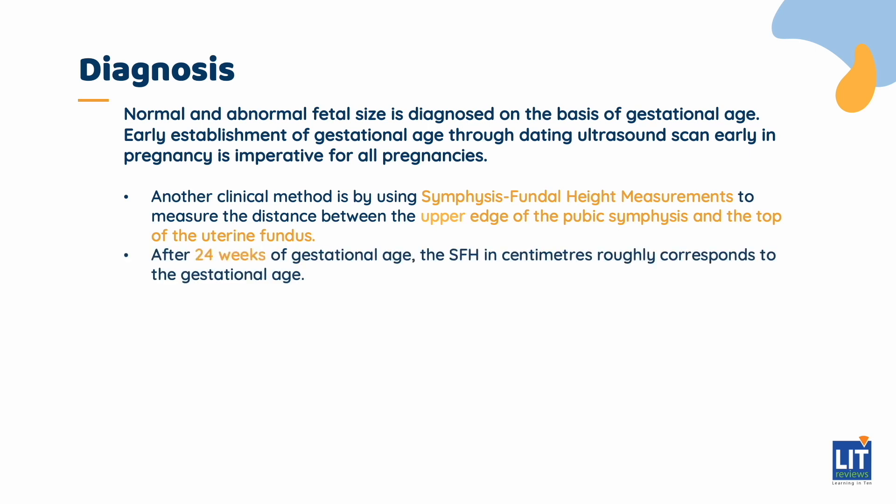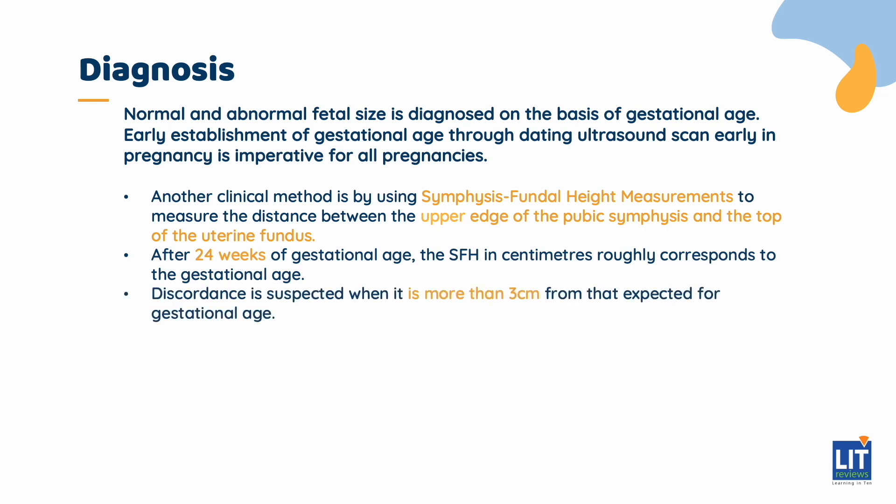After 24 weeks of gestational age, the SFH in centimeters roughly corresponds to the gestational age. Discordance is suspected when it is more than 3 centimeters from that expected for the gestational age. This method performs best when the same clinician does all the serial measurements. While the sensitivity of SFH measurement is not particularly high in the detection of SGA fetus, it performs better than plain abdominal palpation alone.